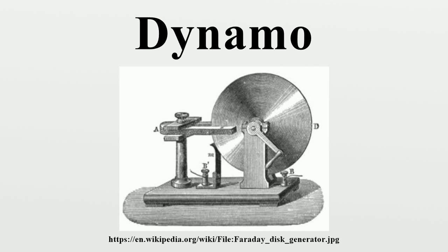Rotary converters were still used for the West Side IRT subway in Manhattan into the late 1960s and possibly later. They were powered by 25 Hz AC and provided DC at 600 volts for the trains.